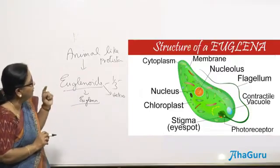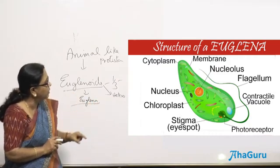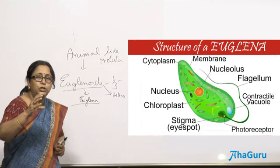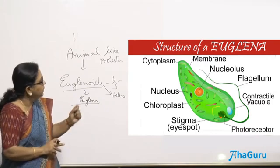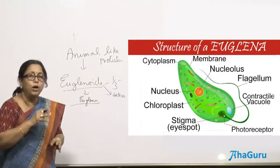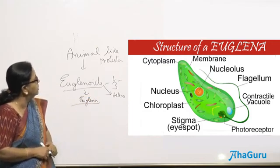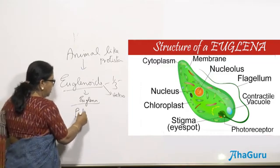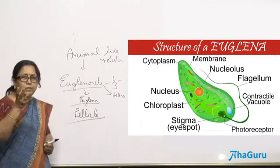If you look at the structure of euglena, you can see it has a lot of chloroplasts and an eye spot. This is an autotrophic euglena. The eye spot helps it to detect light so it can move towards light to photosynthesize. It also has a contractile vacuole which helps in osmoregulation — regulation of water content. It has one large flagellum and a very small flagellum. Apart from the cell membrane, it has a covering known as pellicle.